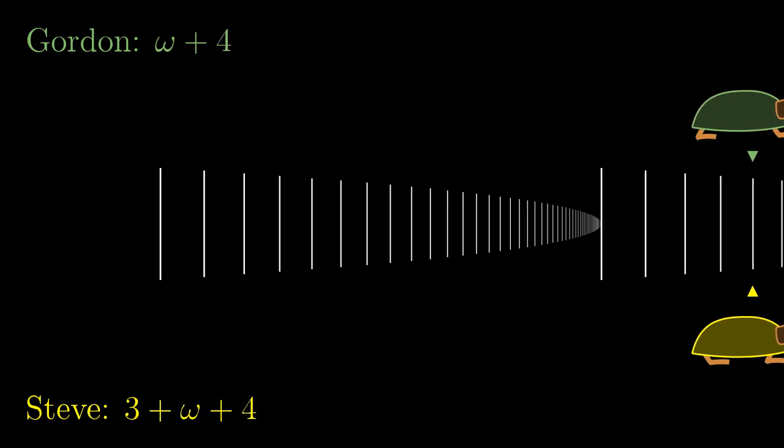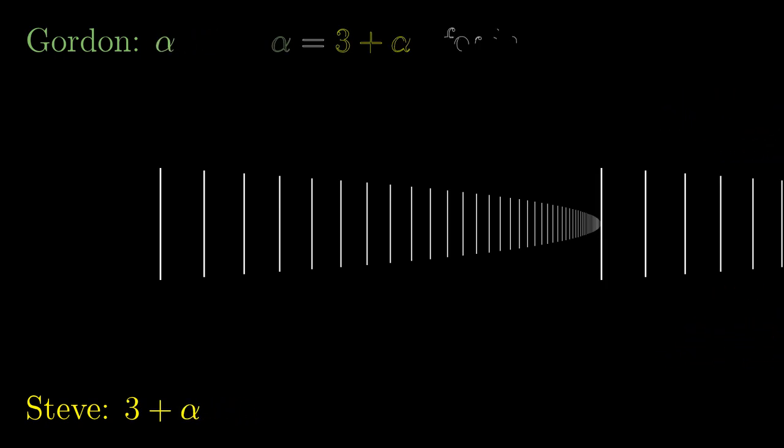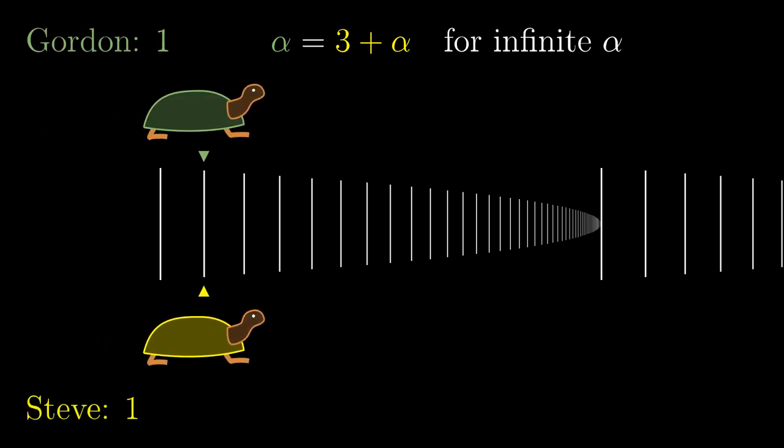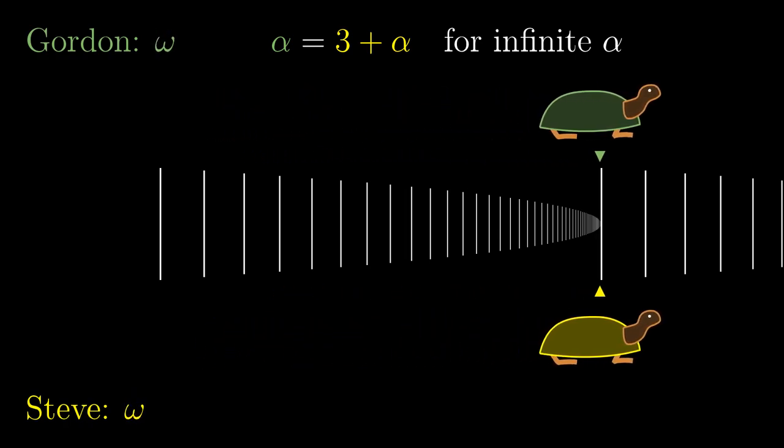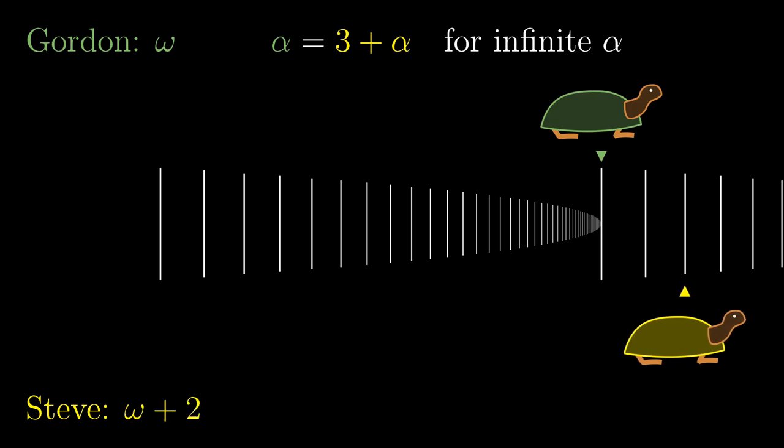From now on, our turtles run one next to each other. So 3 plus any infinite ordinal alpha equals the infinite ordinal alpha. This is in contrast with the case omega plus 3, which can be seen as follows. Both turtles run next to each other for omega steps, and then Steve makes 3 more steps.